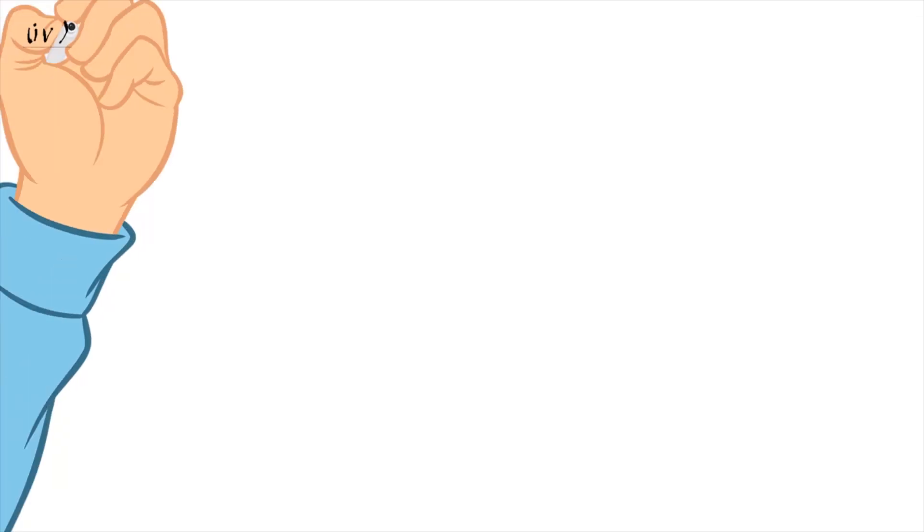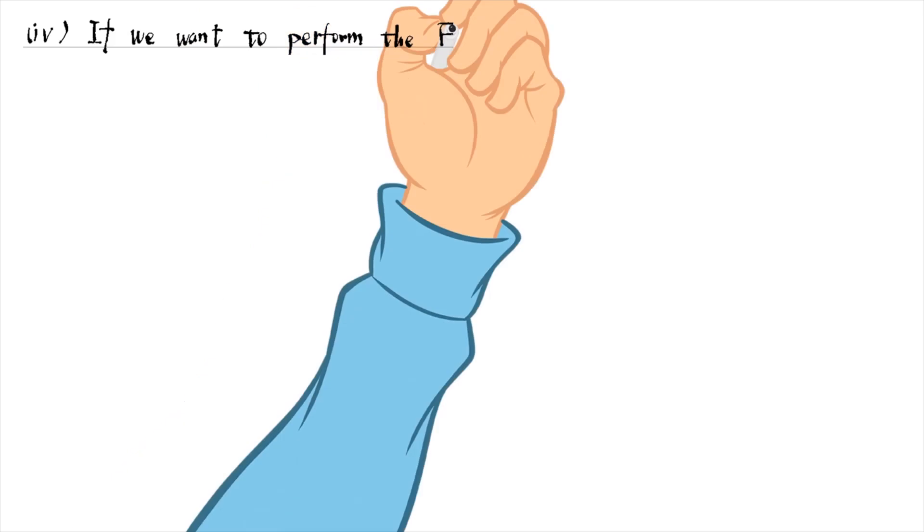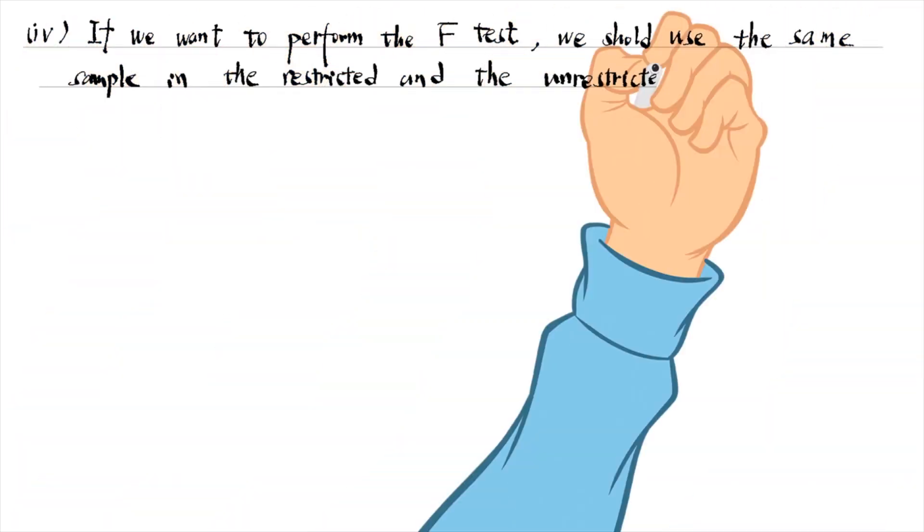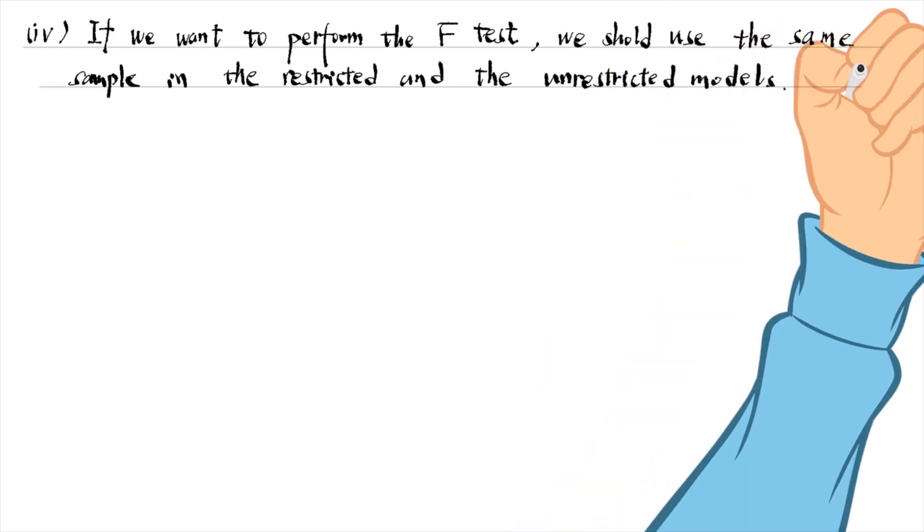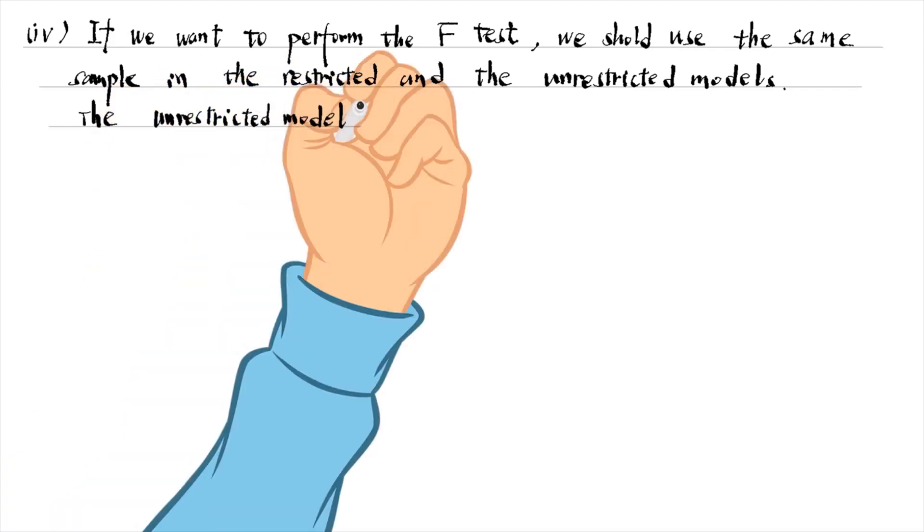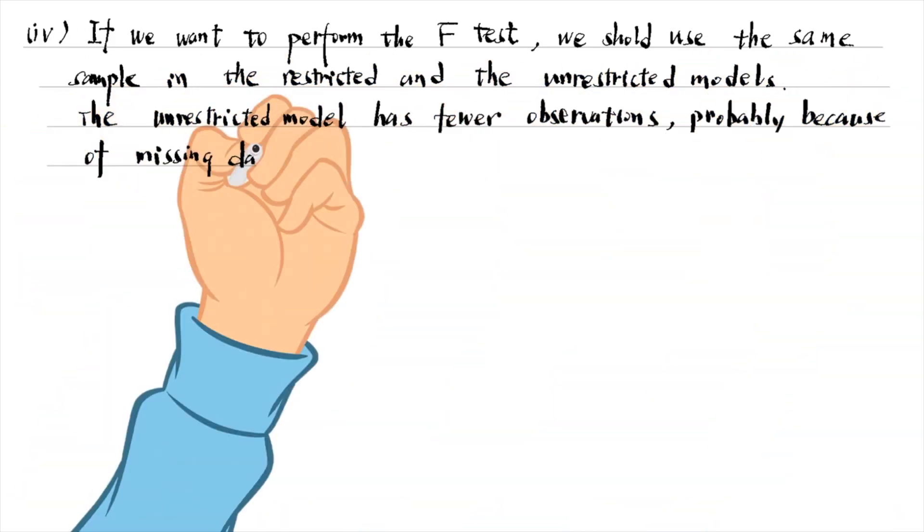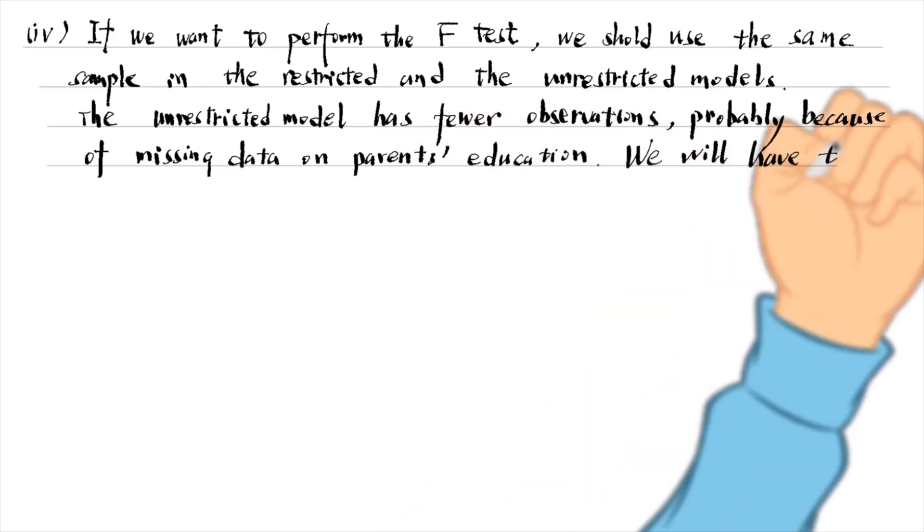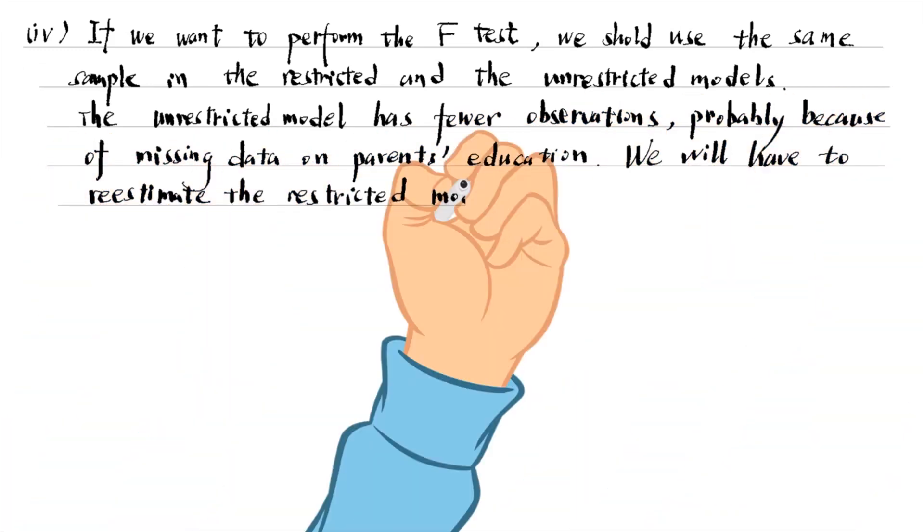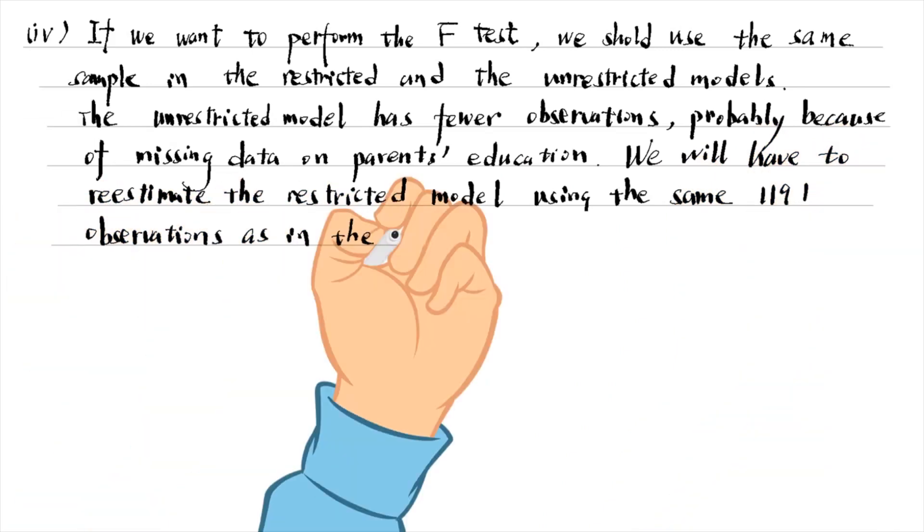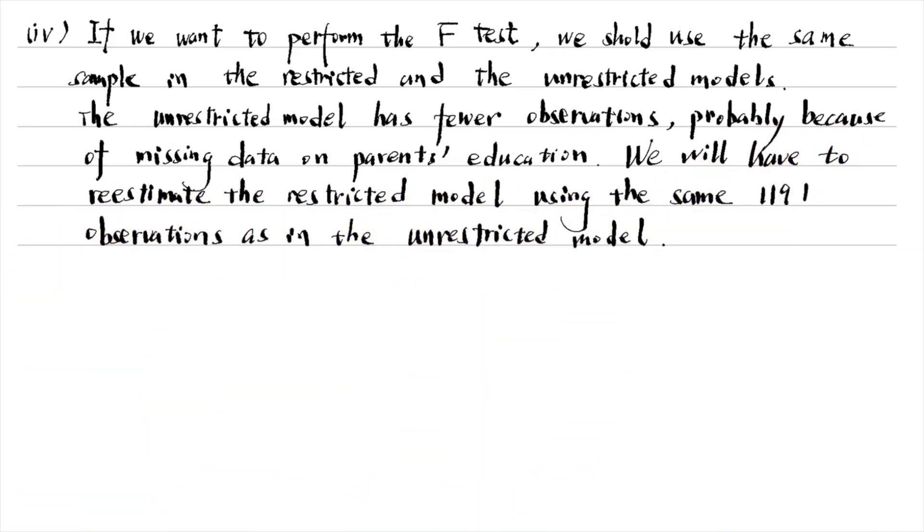In the fourth part, if we want to perform the F-test, we should use the same sample in the restricted and unrestricted models. The unrestricted regression has fewer observations, probably because of missing data on parents' education. We will have to re-estimate the restricted model using the same 1,191 observations as in the unrestricted model, and then conduct the F-test.